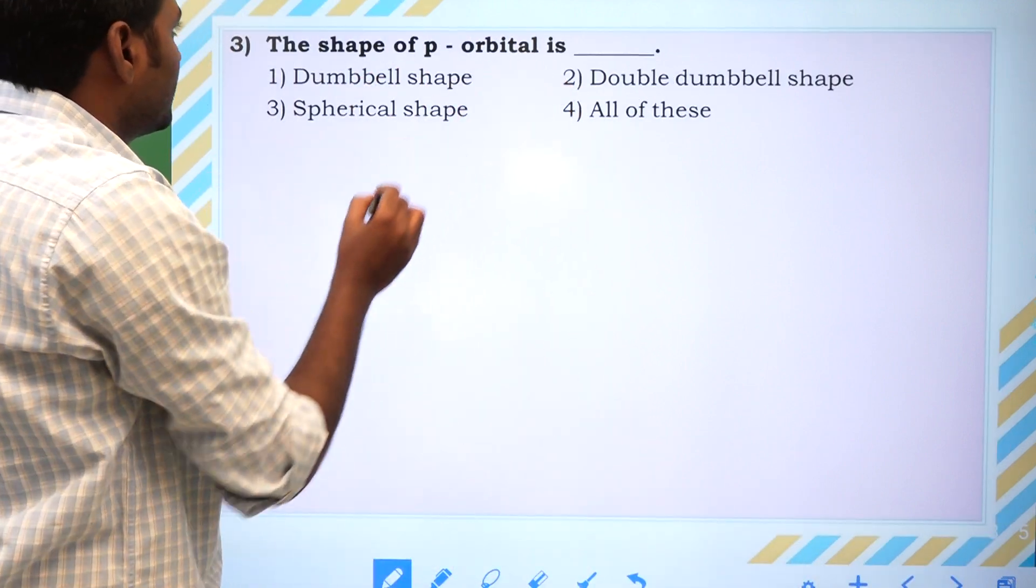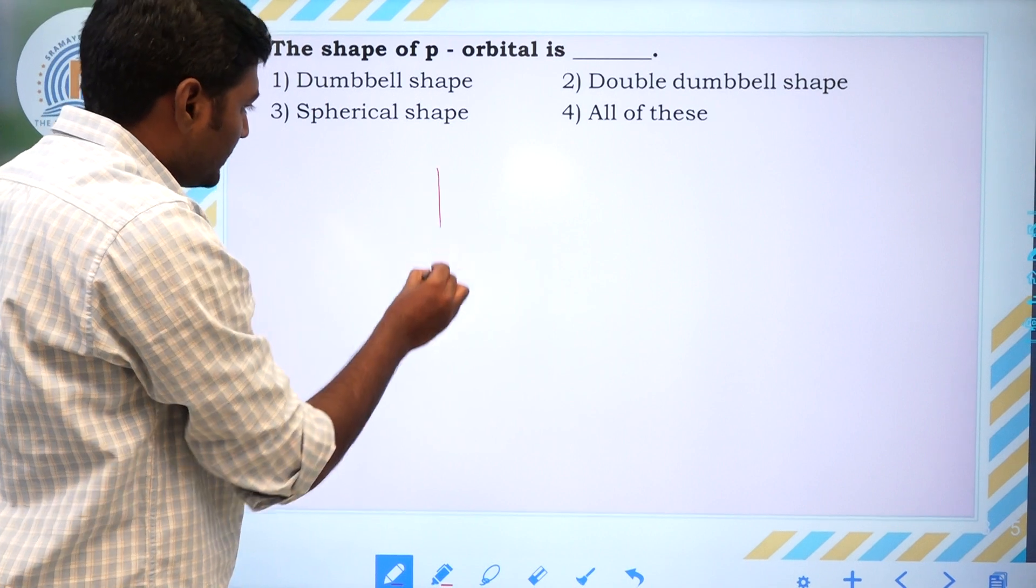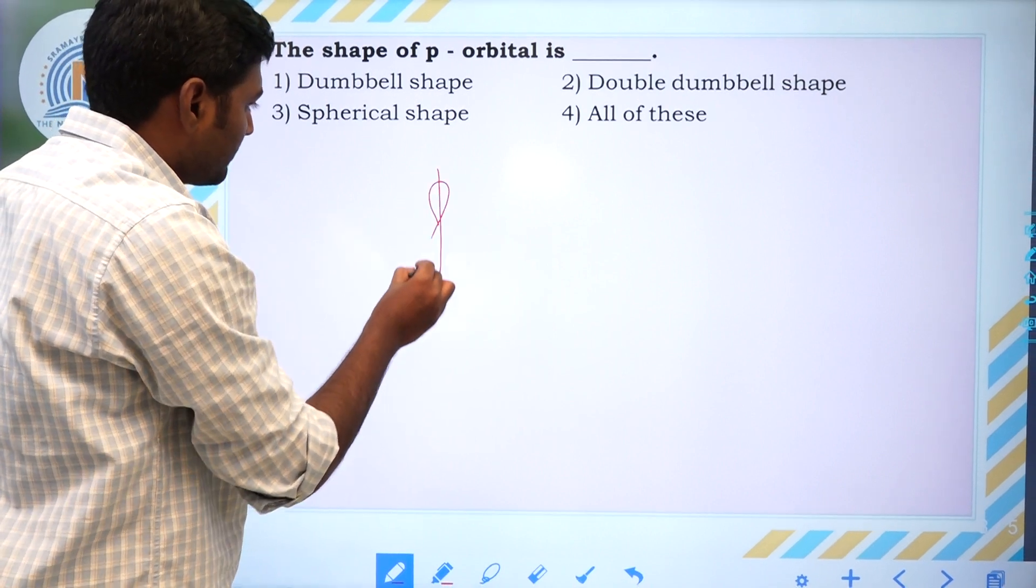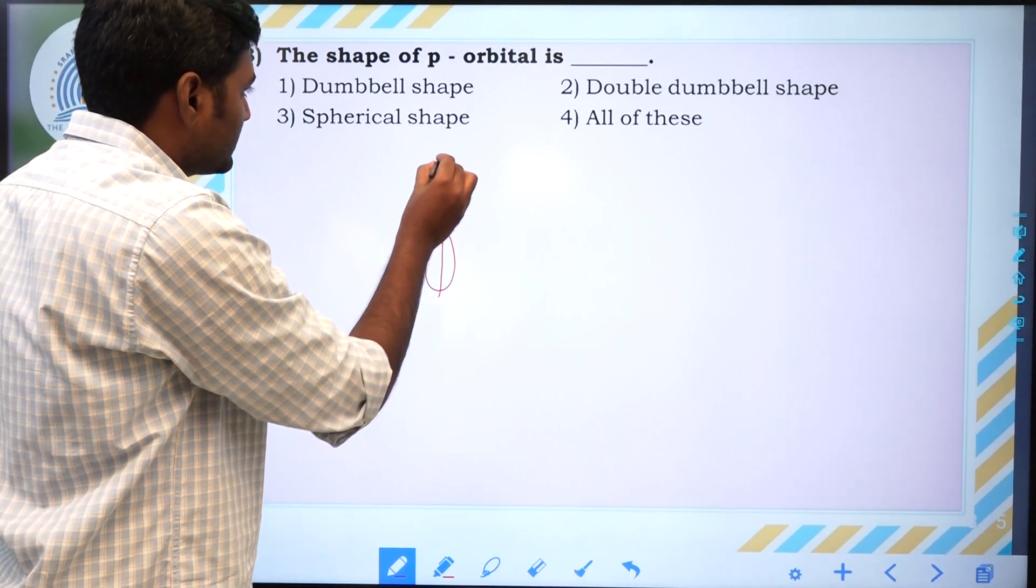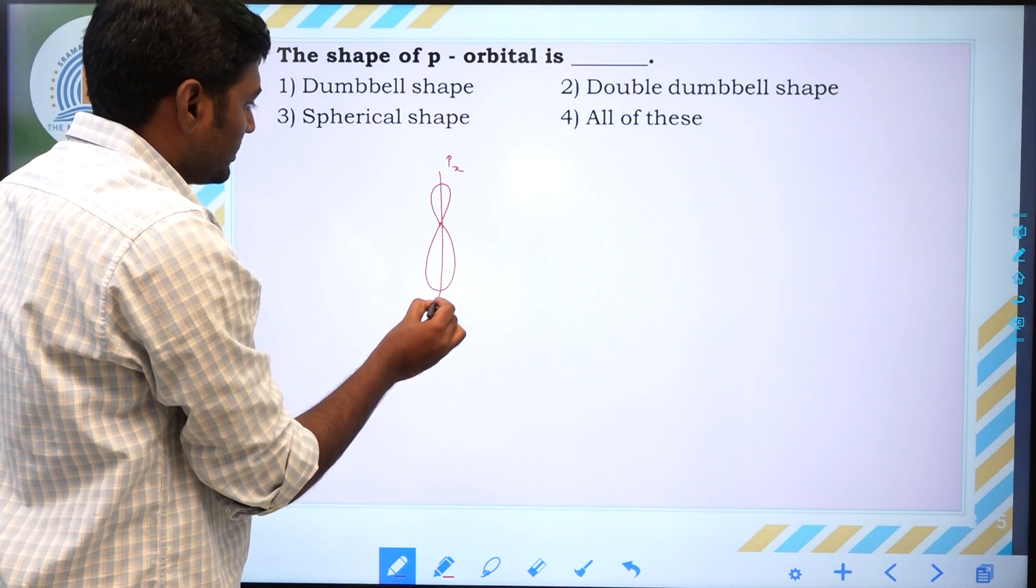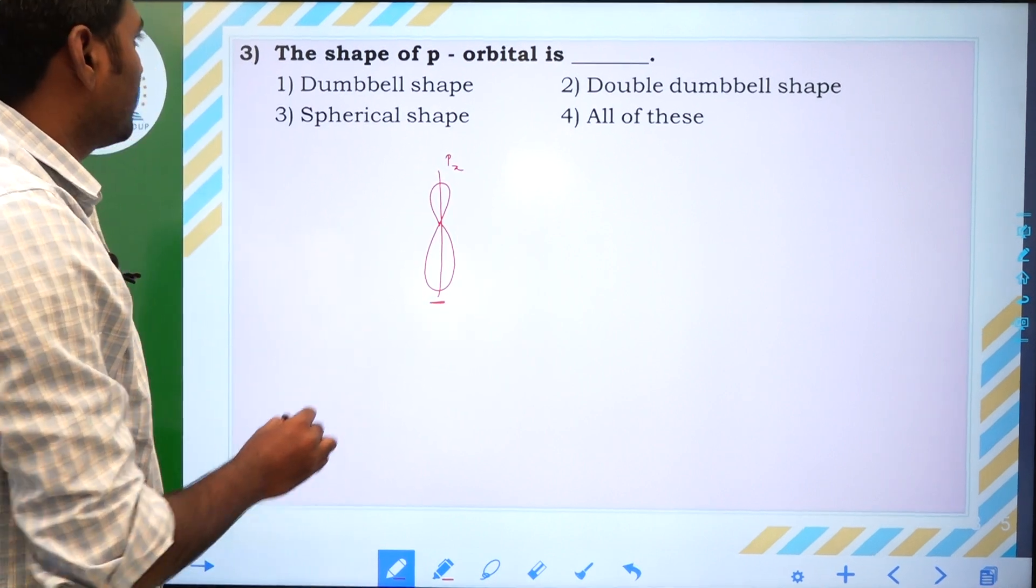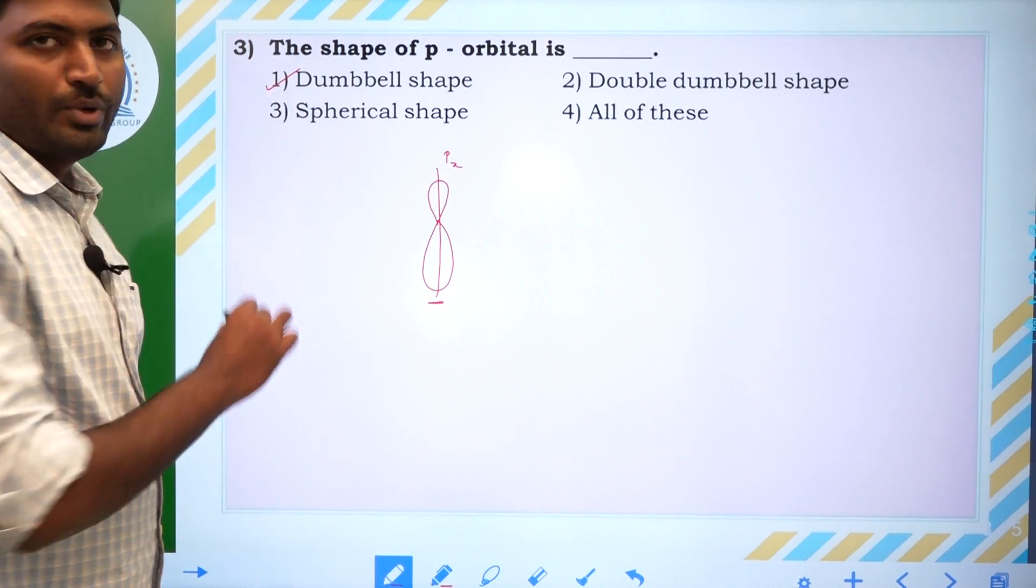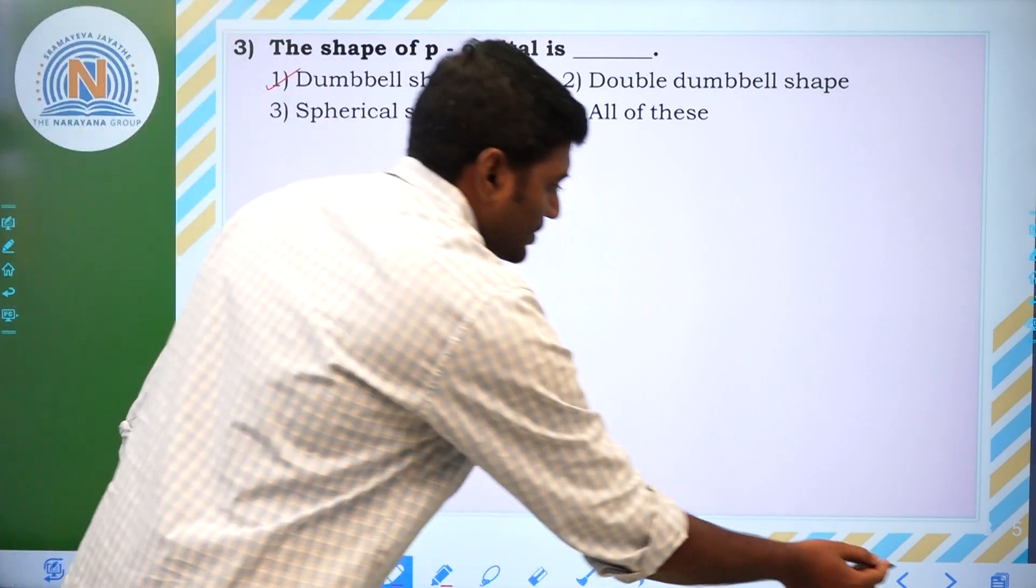Next one. The shape of P orbital is, shape of the P orbital is the dumbbell in shape. It will look like the dumbbell. Answer is dumbbell.